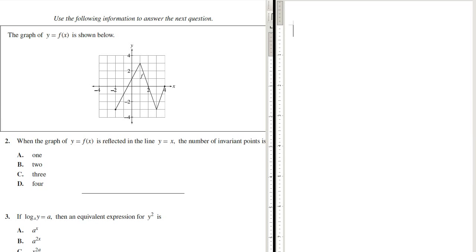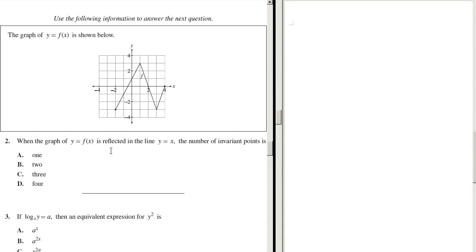Alright, problem two. The graph of y equals f(x) is shown below. When the graph of y equals f(x) is reflected on the line y equals x, the number of invariant points is... Alright, so what's an invariant point? An invariant point is simply any point where the x coordinate and the y coordinate are the same.